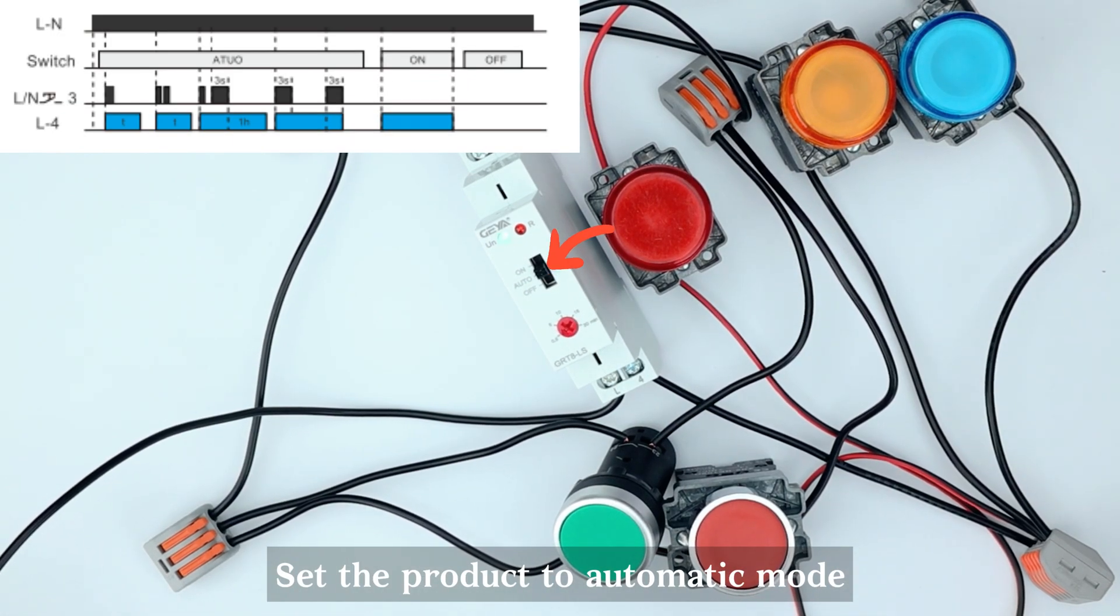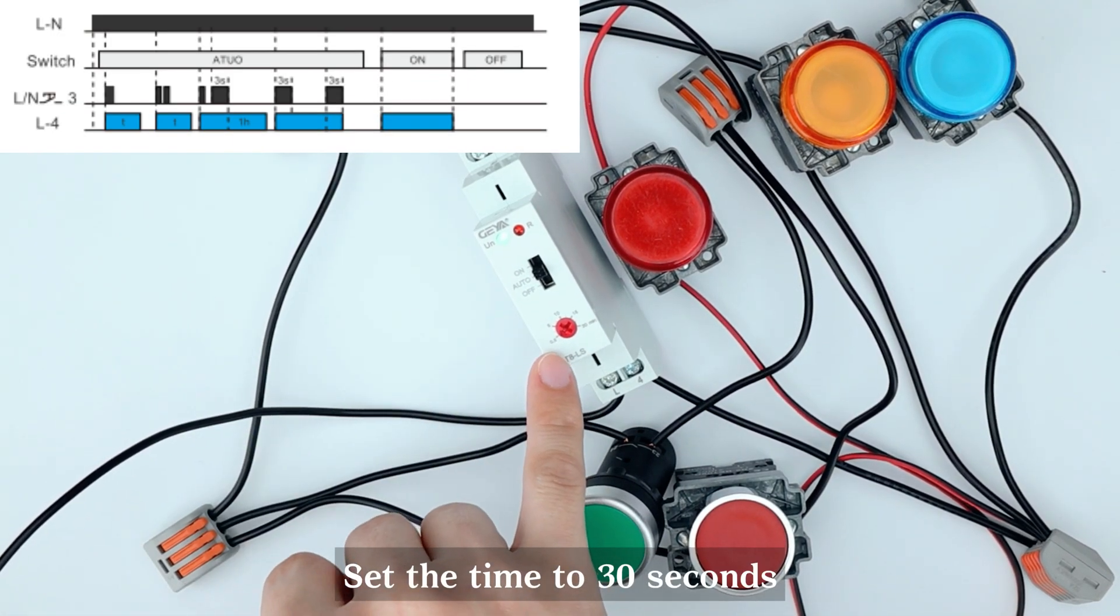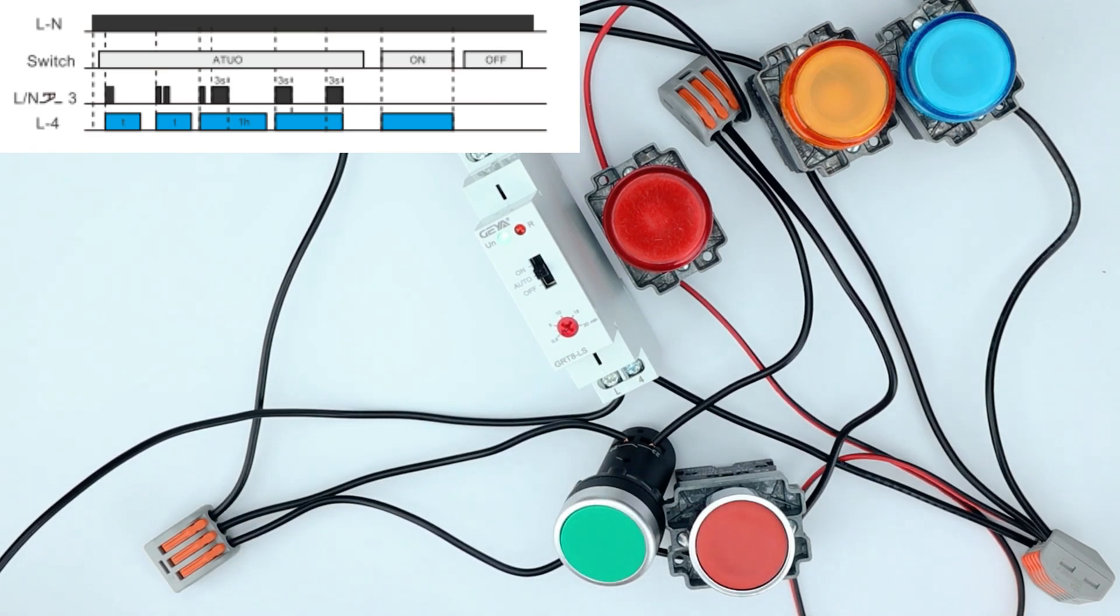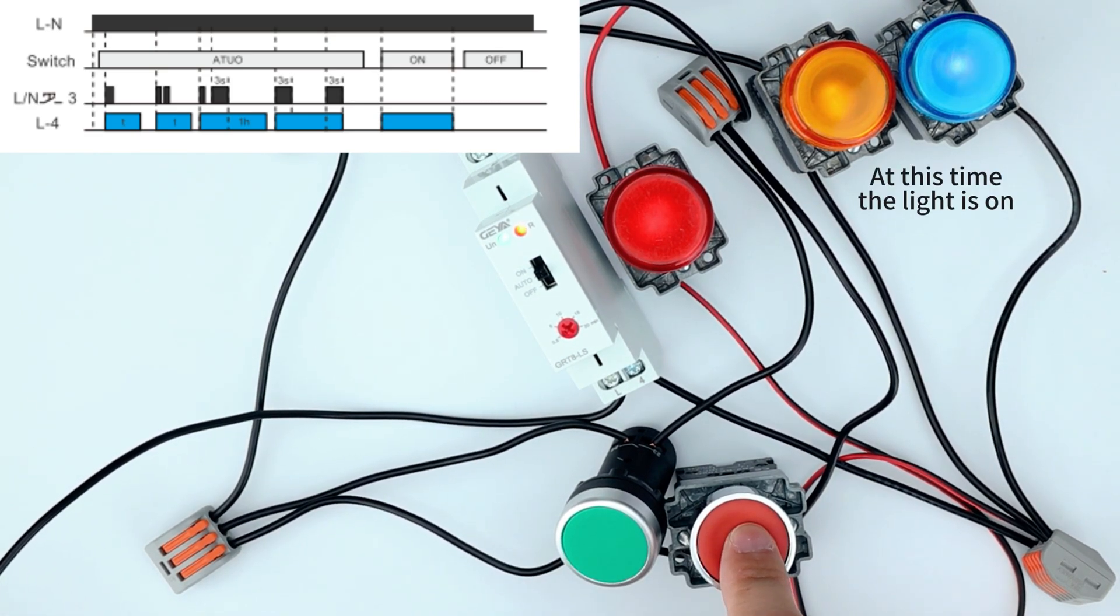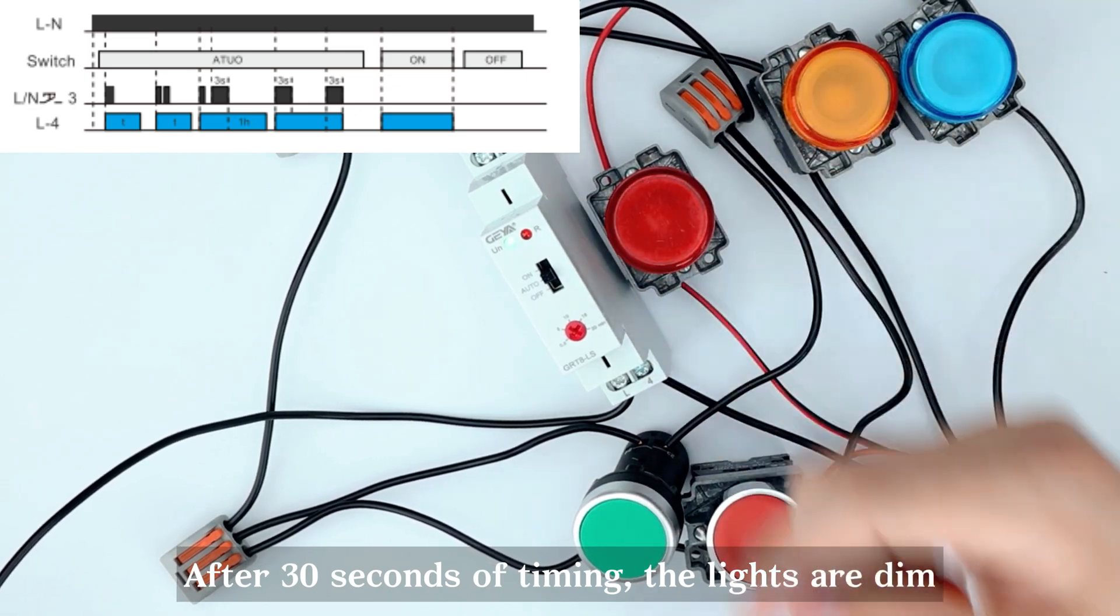Set the product to automatic mode. Set the time to 30 seconds. The down button light is on. After 30 seconds of timing, the lights are dim.